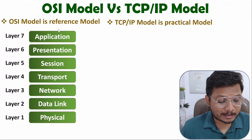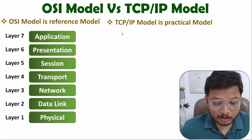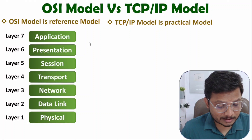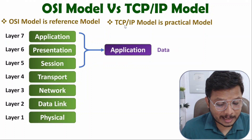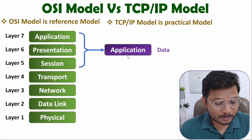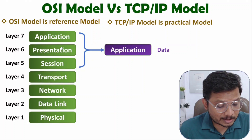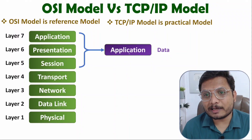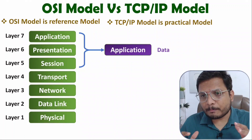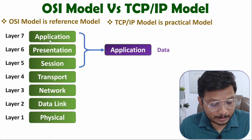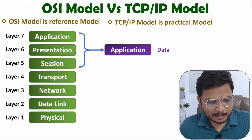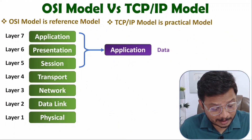Now let's understand these seven layers with respect to TCP/IP model. TCP/IP model is based on OSI model, but its structure is different. In TCP/IP model, the first layer is the application layer, and in this model the combination of OSI's three layers — application, presentation, and session — forms a single application layer. Many practical applications like current browsers perform all three of these tasks.